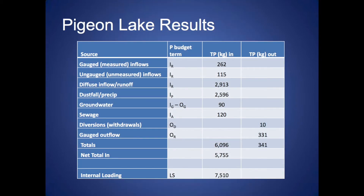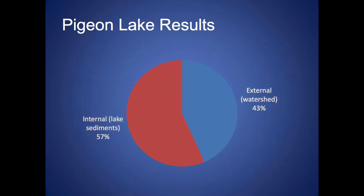When you do all your calculations, this shows for the phosphorus term budget — each of the different terms and how much phosphorus, in this case for Pigeon Lake. It shows all the phosphorus going in as well as going out, and our net internal loading coming into the lake. On the pie chart, split between internal loading and external through the watershed, you see that just over half of the phosphorus on an annual basis is coming in from the lake sediments, with the rest coming from the watershed.